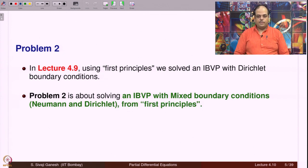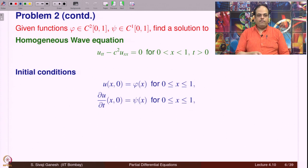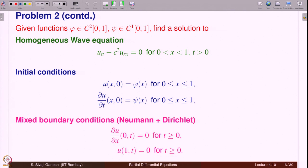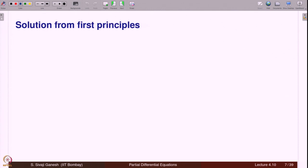We want to solve this using first principles. Given φ in C²[0,1] and ψ in C¹[0,1], find a solution to the homogeneous wave equation with initial displacement φ and initial velocity ψ. The mixed boundary conditions are: ∂u/∂x at x = 0 equals 0, and u(1,t) = 0. So the boundary conditions are zero, but their nature has changed — derivative at one boundary, function value at the other.